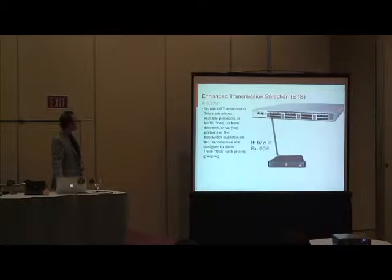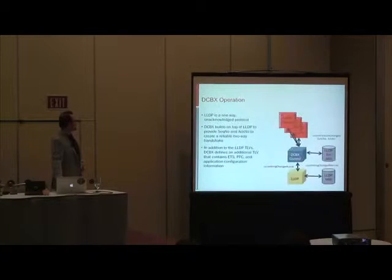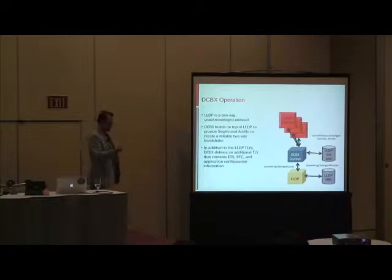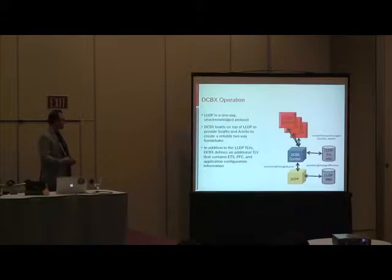With priority grouping, you basically declare that you're going to have this family for this type, or you're going to require this much for FCoE. And essentially, through the DCBX operations, you're able to talk to a storage array that supports this — it will say, okay, I support DCB. And essentially you can recognize and create this relationship.